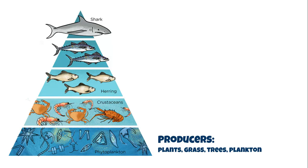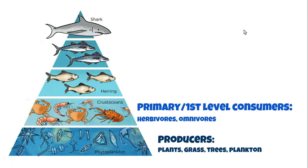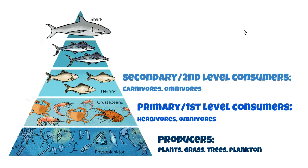The first level are the producers — any organism that photosynthesizes would be in this trophic level. The second trophic level are called the primary consumers; they could be organisms that are herbivores or omnivores. The third trophic level are the secondary consumers, organisms that are carnivores or omnivores.